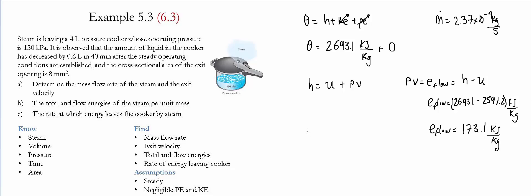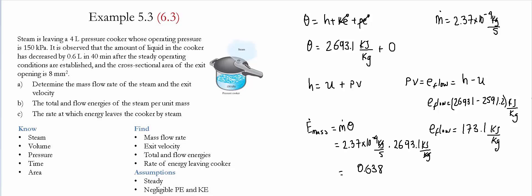The final step is to calculate the rate at which energy leaves the cooker by the steam. This equals the mass flow rate times the total energy per unit mass: 2.37 times 10 to the negative 4 kilograms per second multiplied by 2693.1 kilojoules per kilogram. Kilograms cancel, giving 0.638 kilojoules per second, which equals 0.638 kilowatts — the rate of energy leaving the cooker.